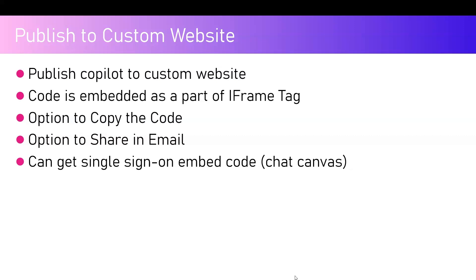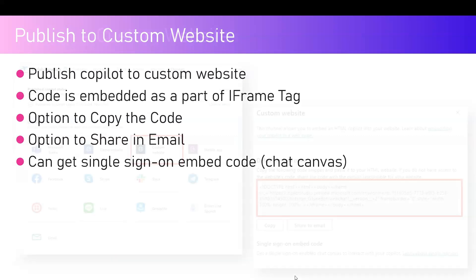Once you publish your copilot to a custom website channel, it will give you an iframe code. You just need to take that iframe code and embed it within your website HTML. You get an option to copy the code, share it in an email, and there is a single sign-on embed code chat canvas option available as well.